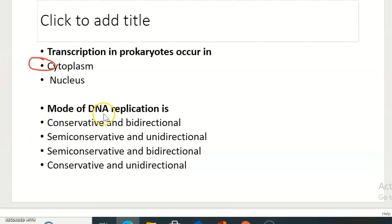Mode of DNA replication is conservative and bidirectional, semi-conservative and unidirectional, semi-conservative and bidirectional, conservative and unidirectional. The right answer is semi-conservative and bidirectional.